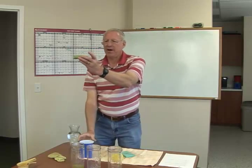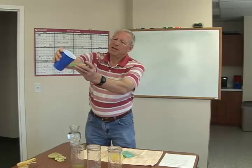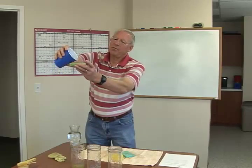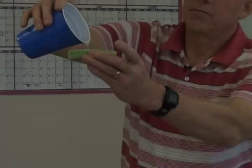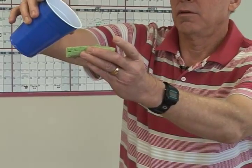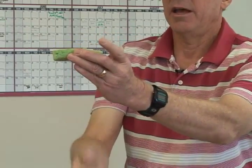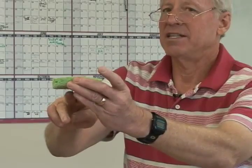Now if I add just one more drop of water, you can see water comes through the soil profile and drips down and out the bottom. And if that's past my root zone,